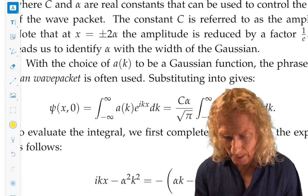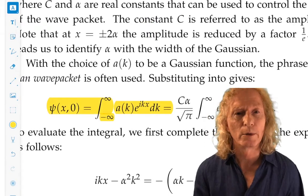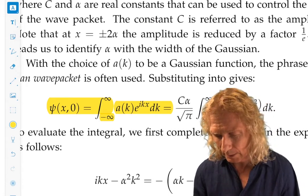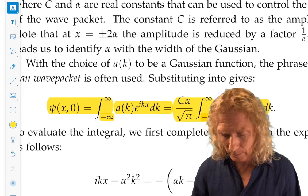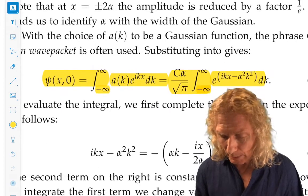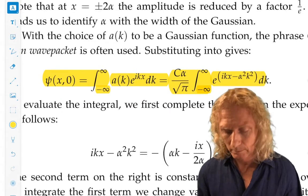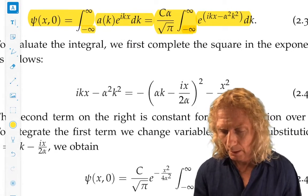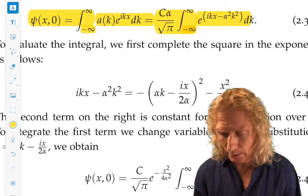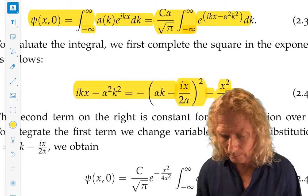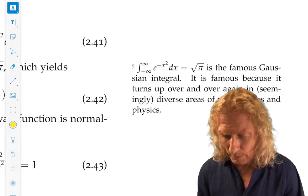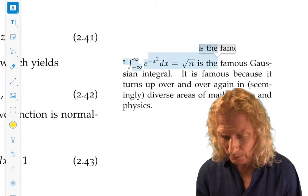So if we plug in this value for a of k into this expression for the Gaussian, we end up with this expression. Now, we're going to choose C so that we have a normalized wave function. We can actually do this integral, and I'm not going to go through the details. The argument on the exponential that's highlighted here, we can complete the square. We can use this famous expression for the Gaussian integral.